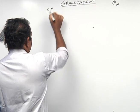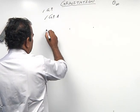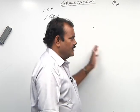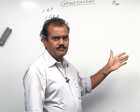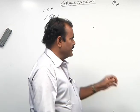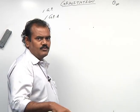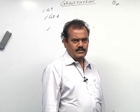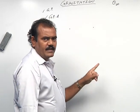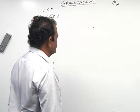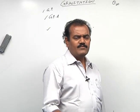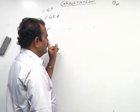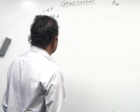Gravitational potential difference, and thereafter equipotential surface. Equipotential surface means if gravitational potential is constant - if the gravitational potential is the same at every point, then the locus of those points is said to be an equipotential surface. For example, a spherical body - we can take the Earth's surface also - they have the same gravitational equipotential surface.